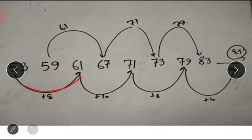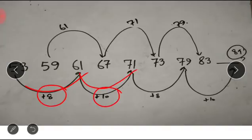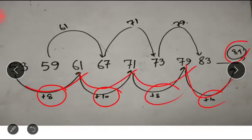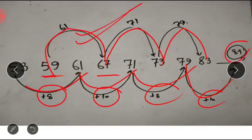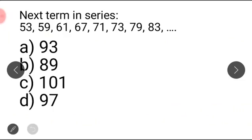From 53 to 61 we added 8, from 61 to 71 we added 10, from 71 to 79 plus 8, again plus 10. So our answer will be 89. The upper series is actually a prime number series, and the alternating pattern is plus 8 and plus 10. Our answer is 89.